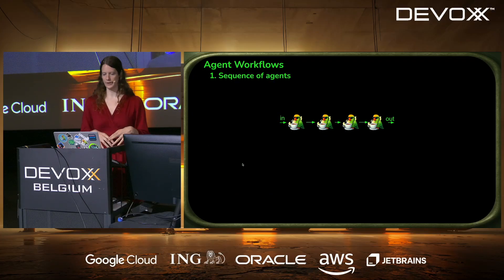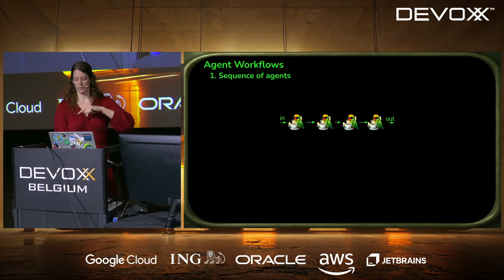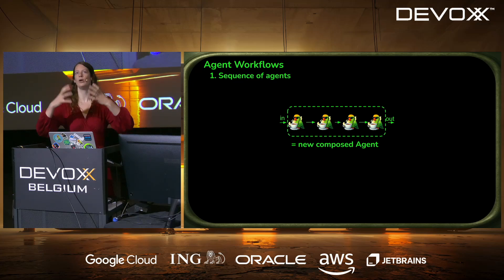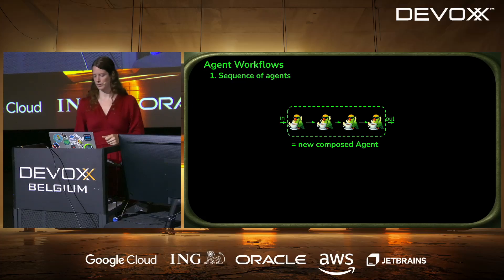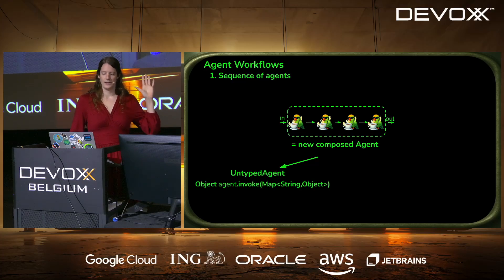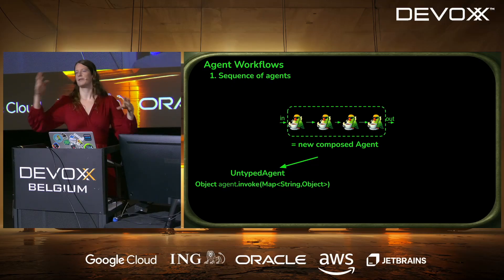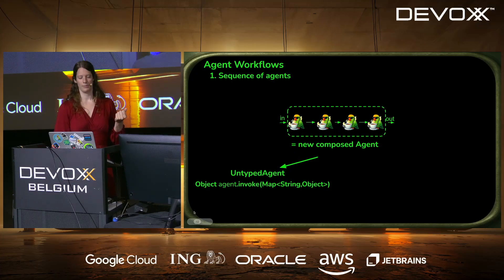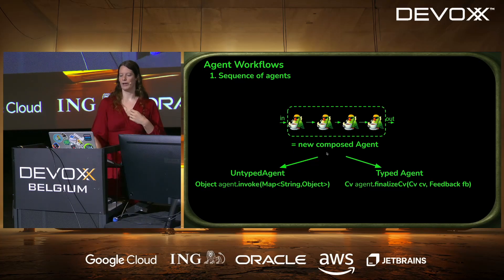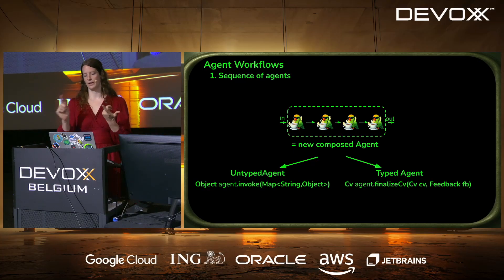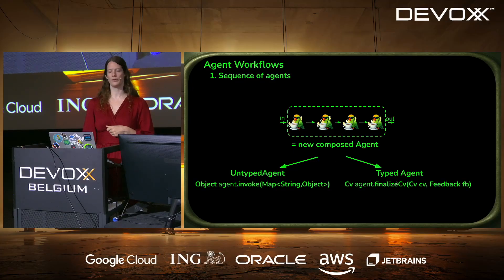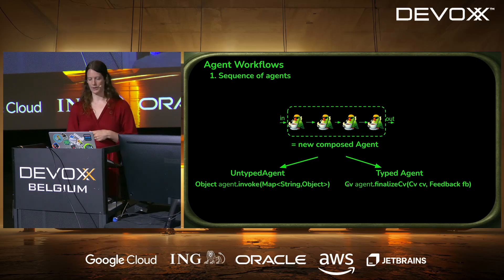The whole point of agents is to use them together. Starting with a sequence of agents, here we have four called in a row, and the composed thing is also just an agent — so you can use it again in other parts of the workflow. You can be lazy and use a general invoke method on a map of input objects to get an object out. Or you can be more careful, type your agent, define what goes in and what comes out, and build beautiful Java things with typed objects as input and return.